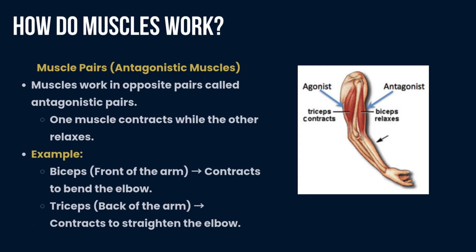Regarding muscle pairs: muscles work in opposite pairs called antagonistic pairs. One muscle contracts while the other relaxes. For example, the biceps contracts to bend the elbow, while the triceps contracts to straighten the elbow.